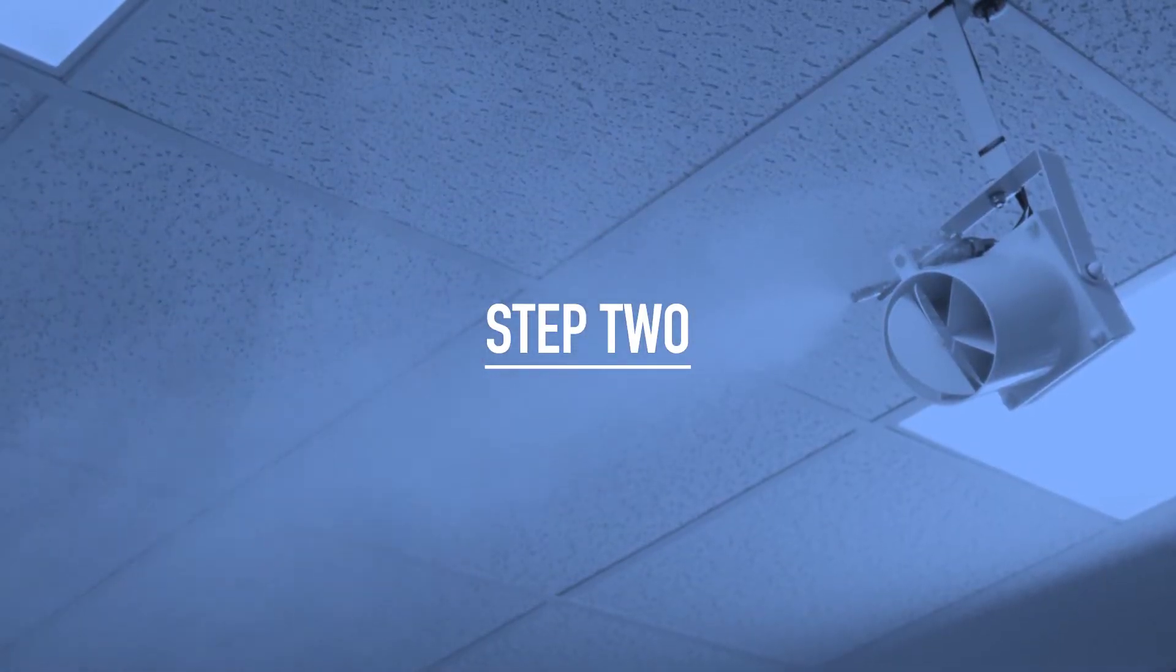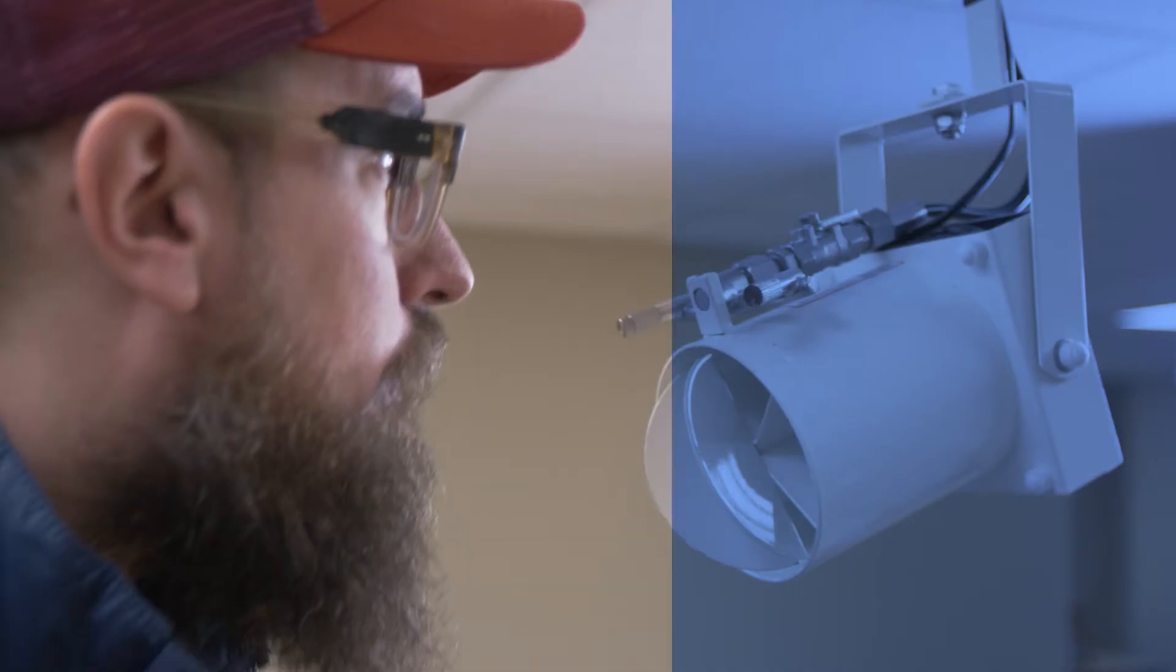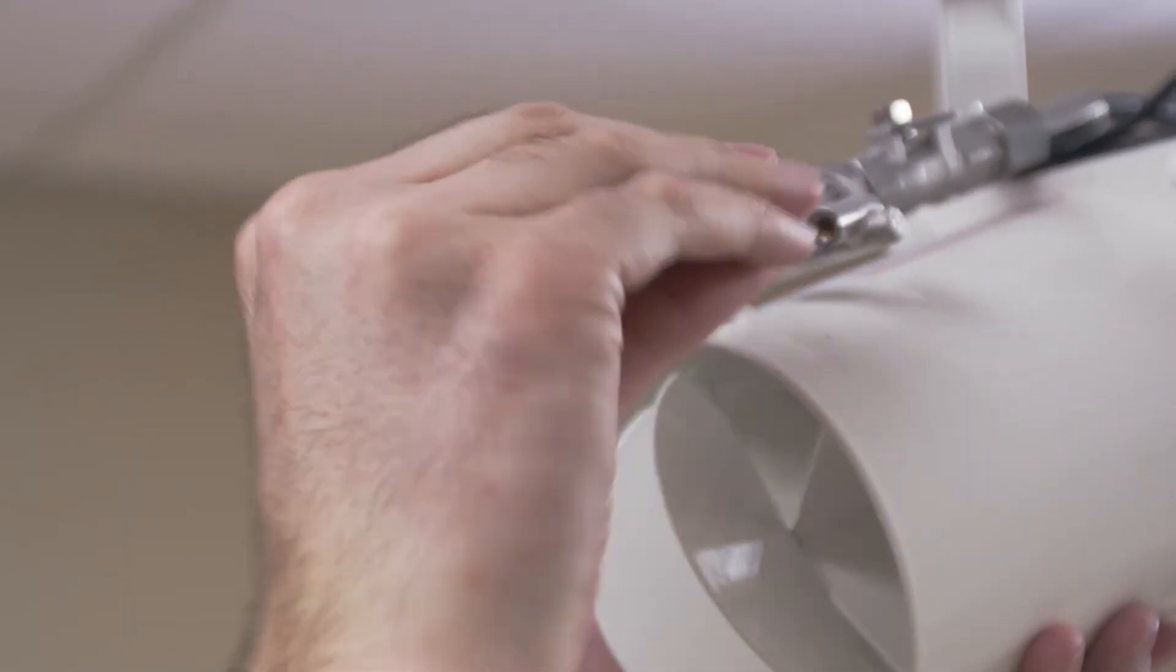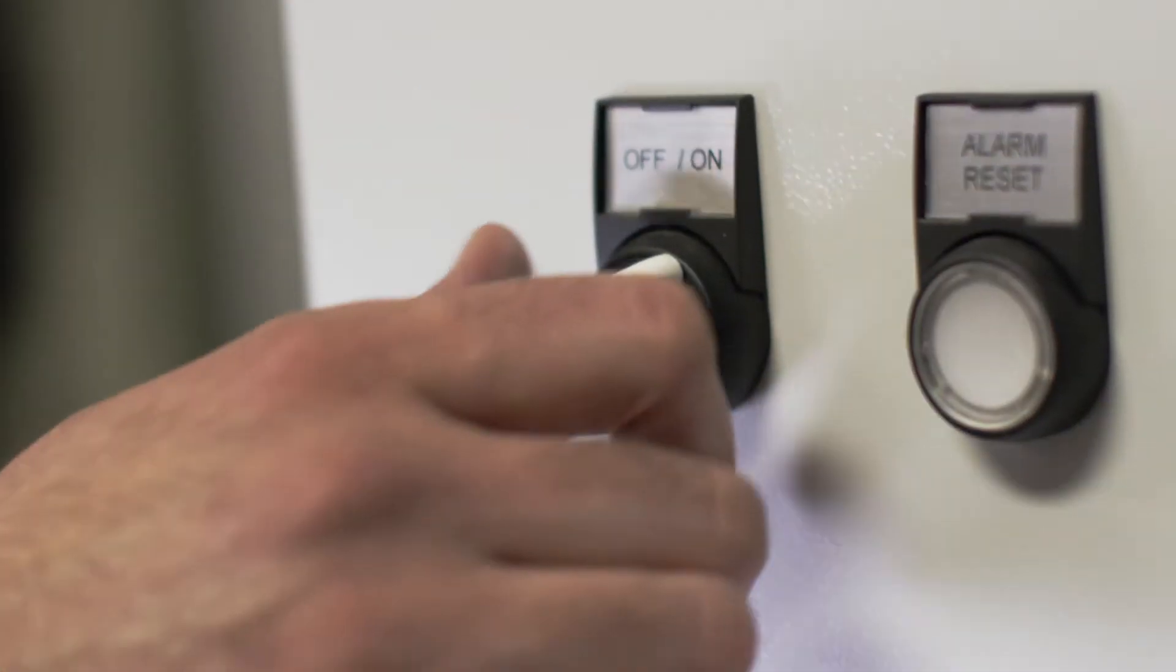Next, locate the source of your water sample. If you're sampling from a nozzle, first close the valve so you can remove the spray head. If you're sampling from a pump, shut it off.